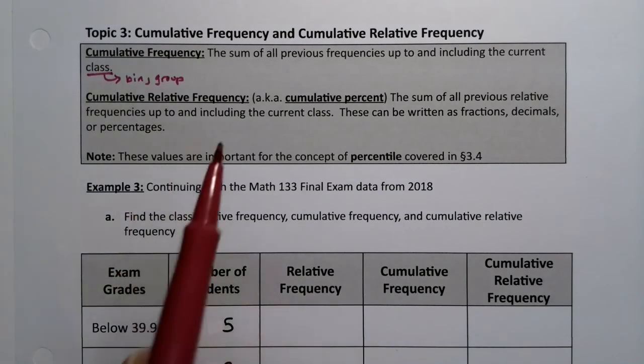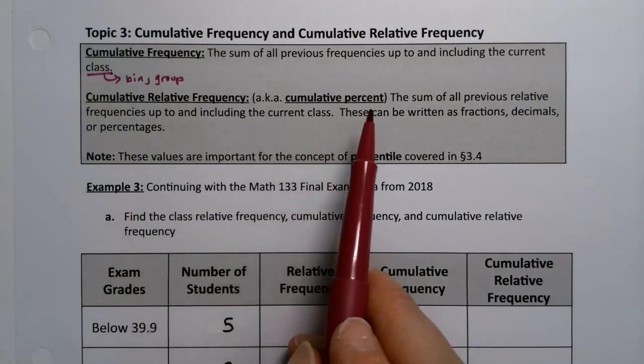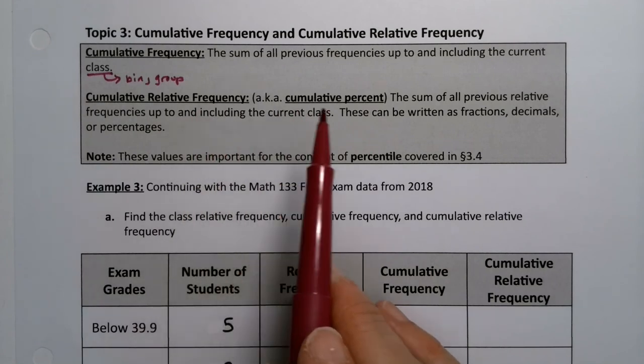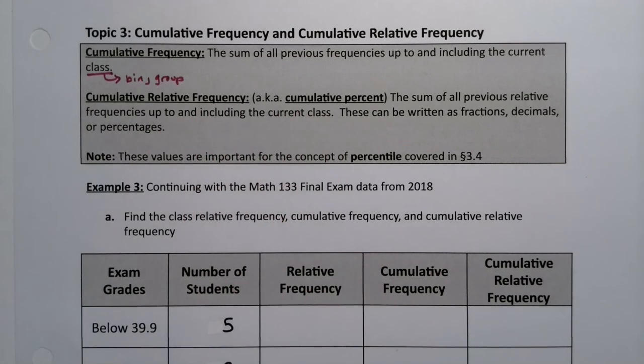Cumulative relative frequency, also known as cumulative percent, because percent is relative frequency, is the sum of all previous relative frequencies or percents up to and including the current class. You can write them as fractions, decimals, percentages, whatever is appropriate for the table that you have.